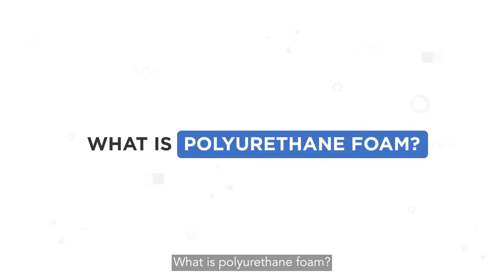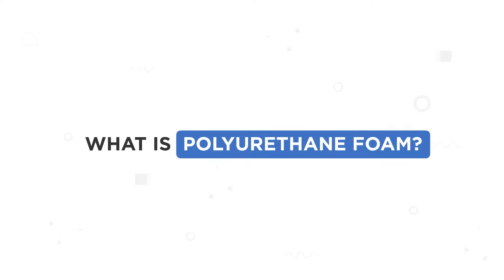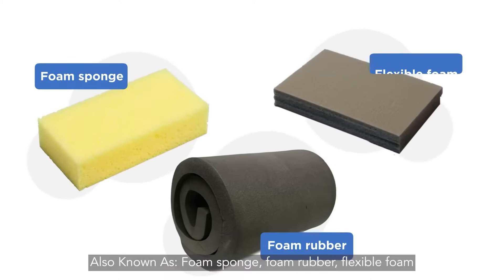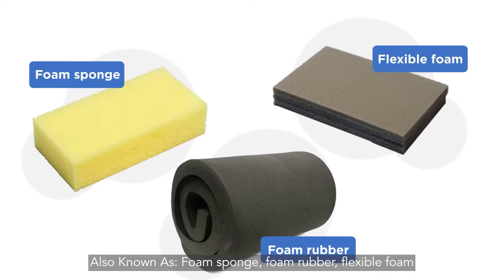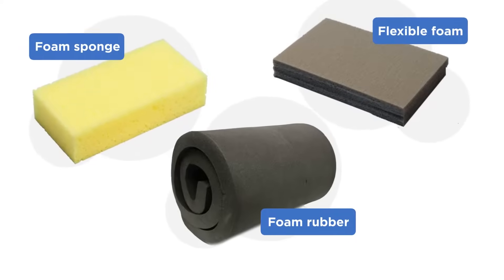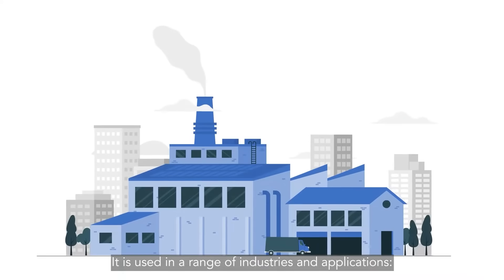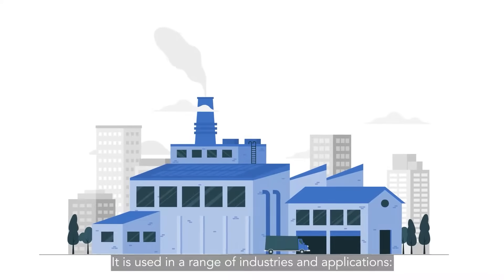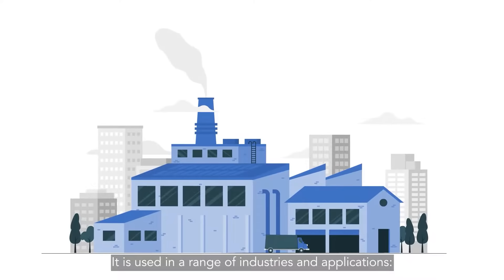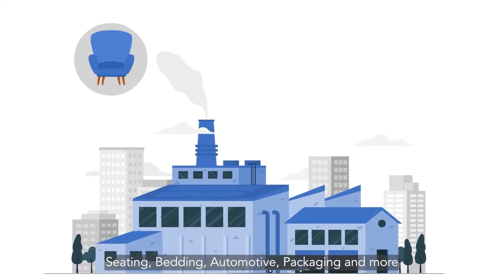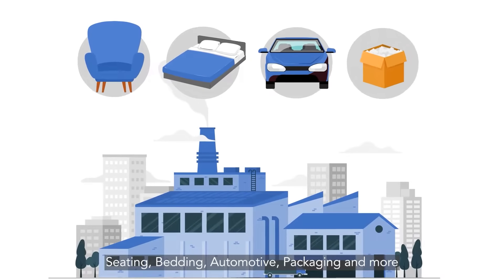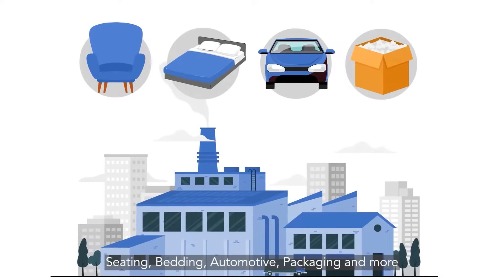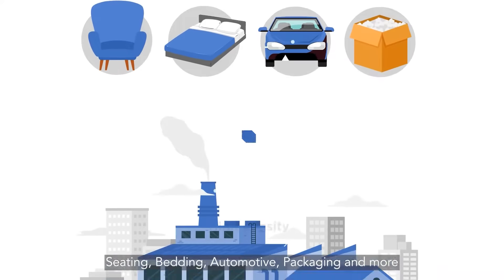What is polyurethane foam? Also known as foam sponge, foam rubber or flexible foam, it is used in a range of industries and applications: seating, bedding, automotive, packaging and more.